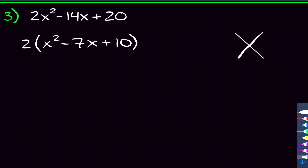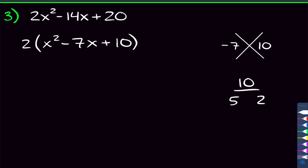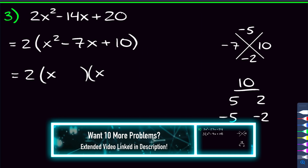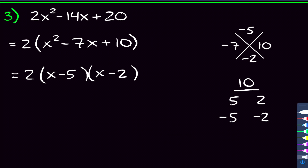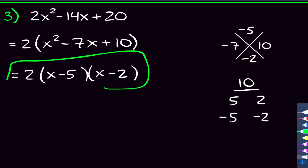Setting up our x chart, we need two numbers that add to be negative 7 and multiply to be 10. Numbers that multiply to be 10: 5 and 2 work, but don't give a negative sum. Negative 5 and negative 2 also multiply to be 10 and add to be negative 7 — those are our numbers. Setting up the factors and putting negative 5 here and negative 2 here — you can switch them — that's the answer for problem 3.